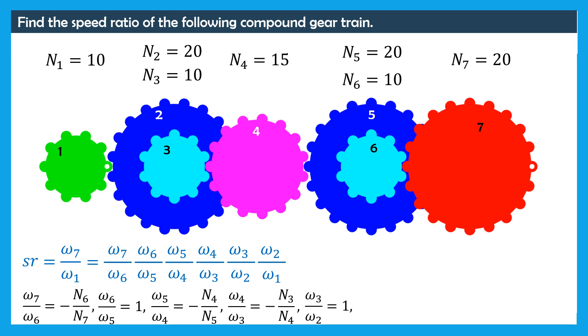Finally, gears 1 and 2 are meshed together, thus omega 2 over omega 1 is equal to minus N1 over N2.